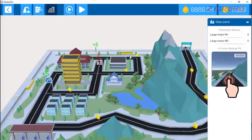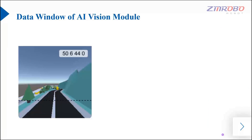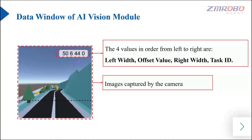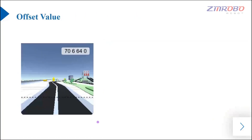Click here to display the data panel and the data window of the AI vision module. On the data window, there is the picture seen by the camera. Click the button in the upper right corner to show or hide the screen. The four values shown in the screen from left to right are: left width, offset value, right width, and task ID.